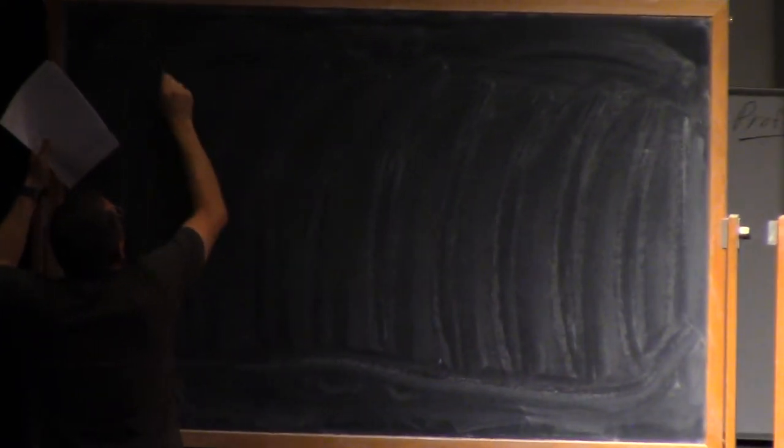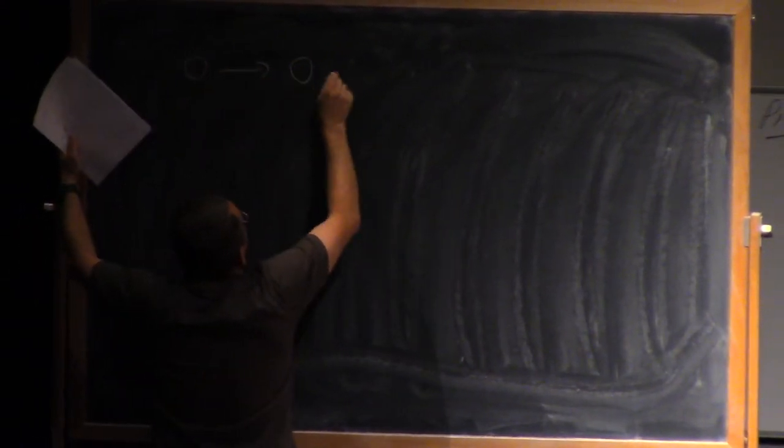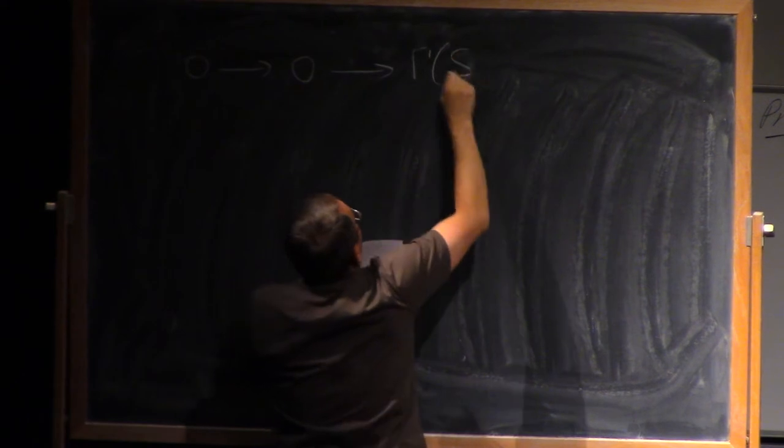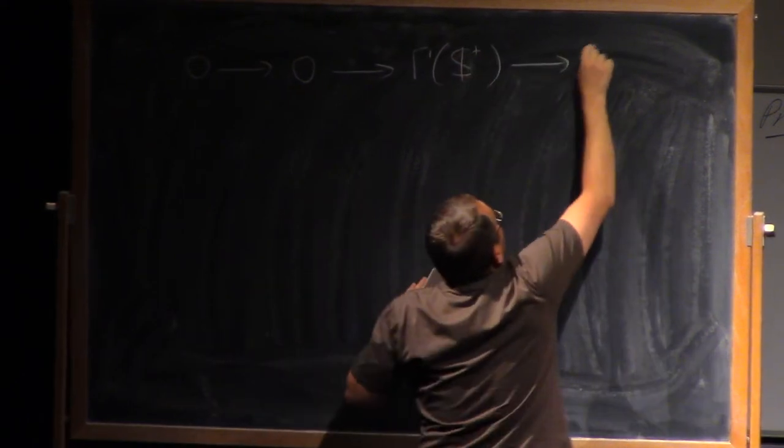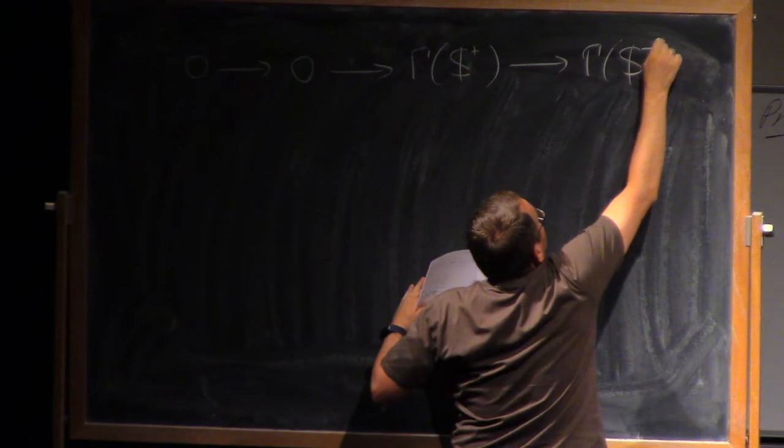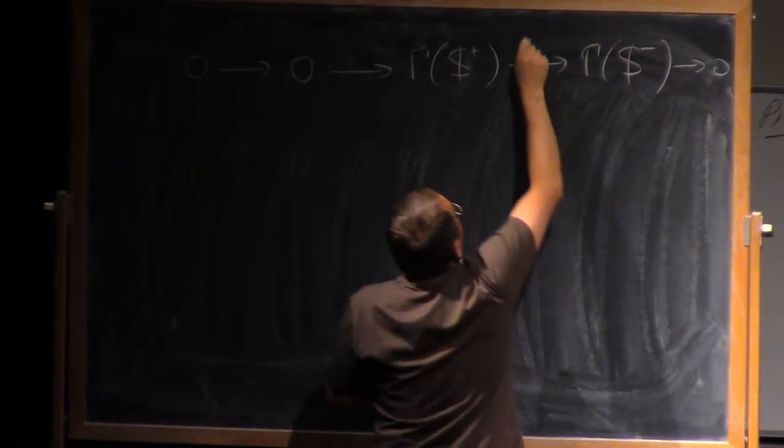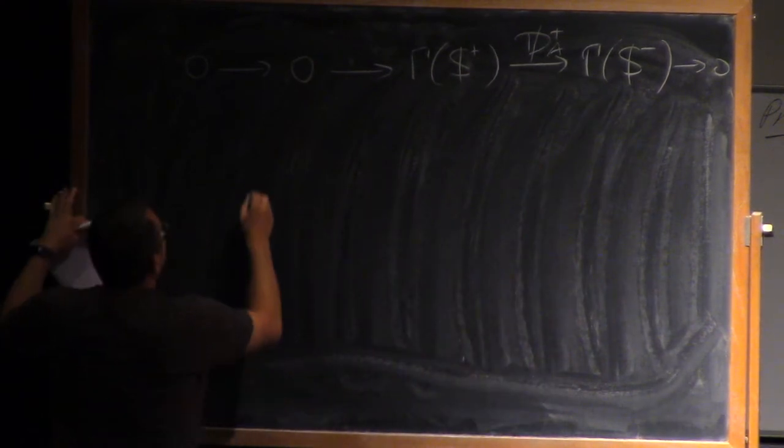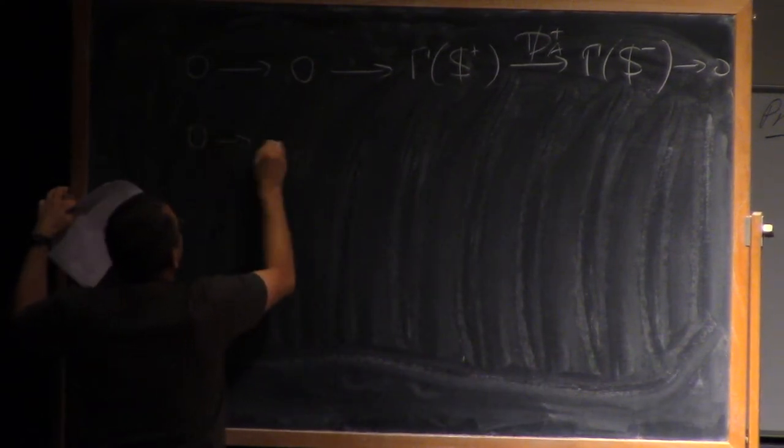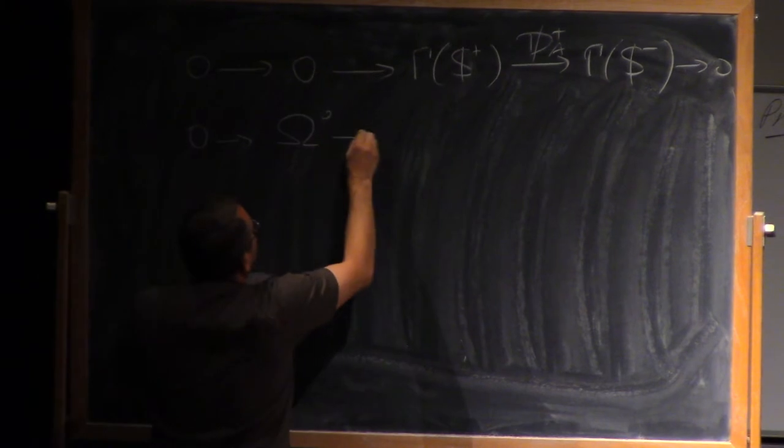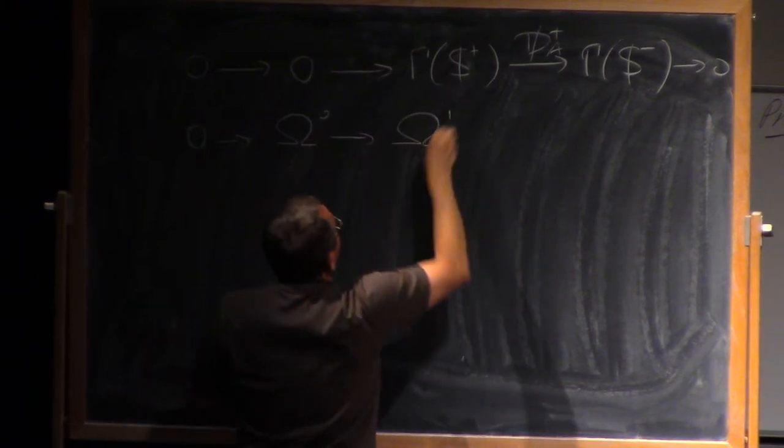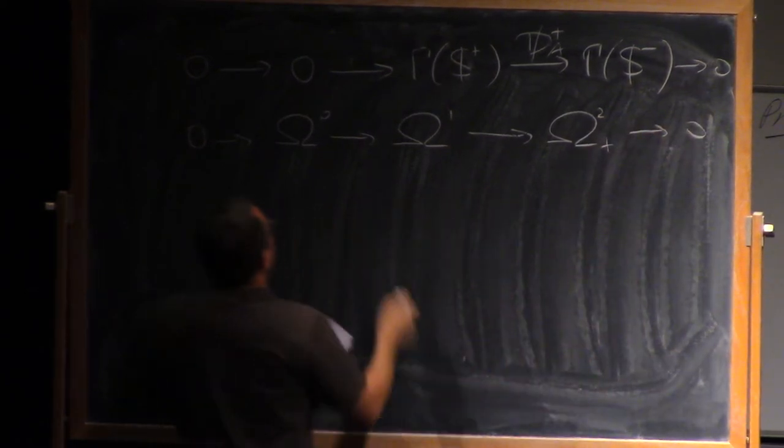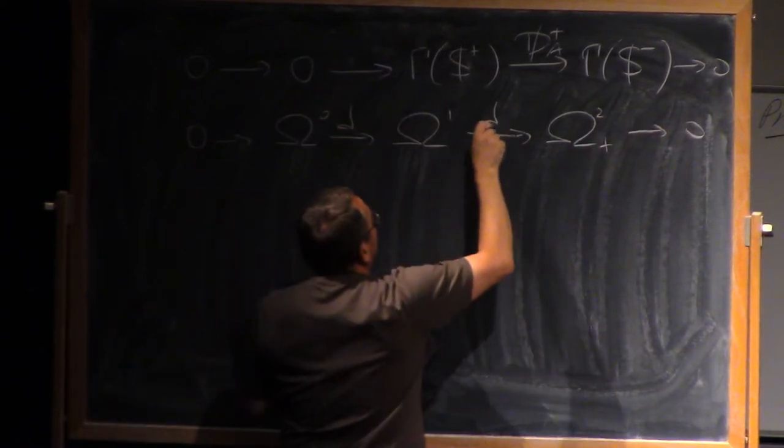So what was that? So the first complex was 0 goes to 0 goes to gamma s plus to gamma s minus 0, and here is ga plus. And the other complex was 0 goes to omega 0, omega 1, omega 2 plus 0, and we have just d and d plus.